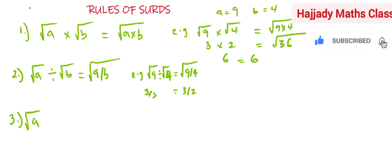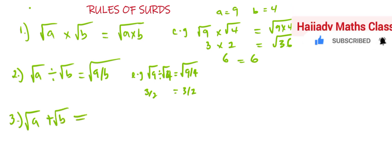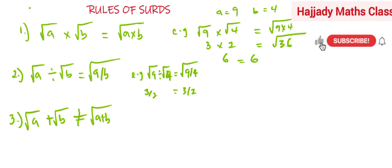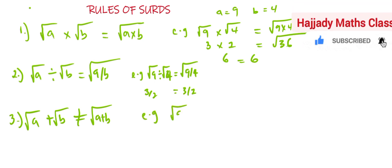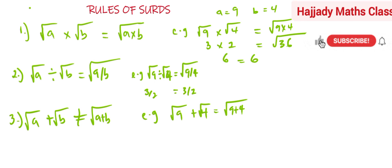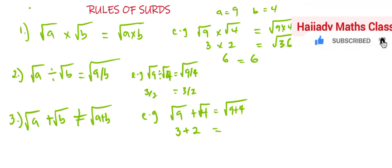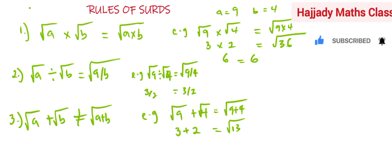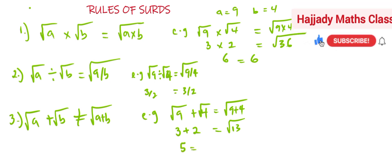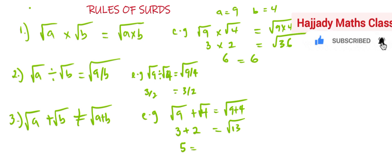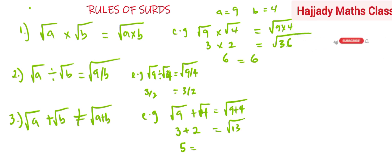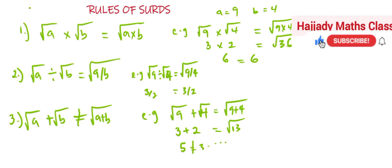Rule number three: root A plus root B is NOT equal to root(A + B). To confirm: root 9 plus root 4 — is it the same as root(9 + 4)? Root 9 is 3, root 4 is 2, so 3 + 2 = 5. But root(13) is less than 4, because root 16 is 4, so root 13 is about 3-point-something. Five is not equal to that, confirming rule three.